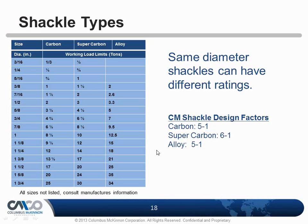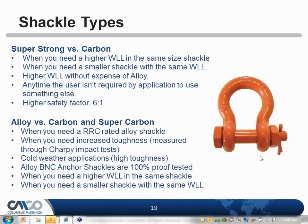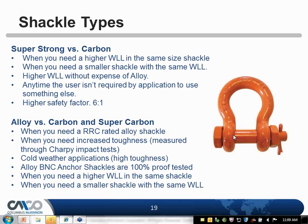When do you want super carbon versus carbon? For general lifting, carbon is fine. If you need a higher working load limit with the same size shackle — say the larger shackle won't fit — step up to super carbon. You can get a higher working load limit without the cost of alloy, since alloy shackles are more expensive. CM recommends super carbon for most general applications unless otherwise specified, as it also has a higher safety factor of 6-to-1.